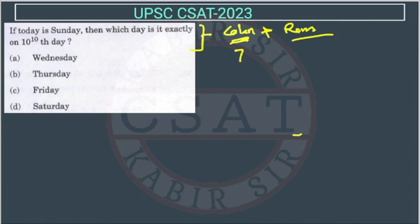So here what we have to do? We have to divide this 10 to the power 10 by 7. So what will we use? We will use the remainder theorem here. This will be the remainder. When we divide, we will get 3. So this will be 3 to the power 10 by 7.